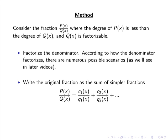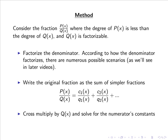Then we write the original fraction as the sum of simpler fractions: P(x)/Q(x) = c1(x)/q1(x) + c2(x)/q2(x) + ..., where q1, q2 are the factors of Q(x) and c1, c2 are functions to be determined. Finally, we cross multiply by Q(x) and solve for the numerator constants in c1(x), c2(x), and so forth.